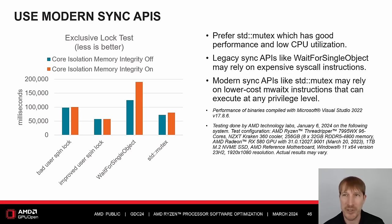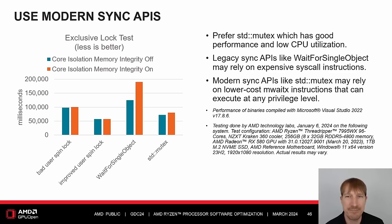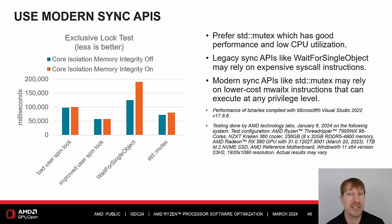Prefer standard mutex with good performance and low CPU utilization. Modern sync APIs like standard mutex may leverage AMD's mwaitx instruction, which can efficiently wait on an address or timeout and can execute at any privileged level. However, legacy sync APIs like WaitForSingleObject may rely on expensive syscall instructions. The syscall instruction invokes an OS system call handler at privilege level 0 from a user privilege level 3 application. Transitioning between privileged domains may require additional OS and hardware work. Core isolation memory integrity, also known as virtualization-based security hypervisor-protected code integrity, may sometimes lower performance.